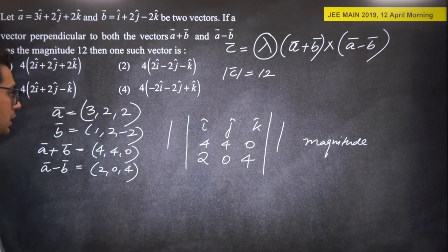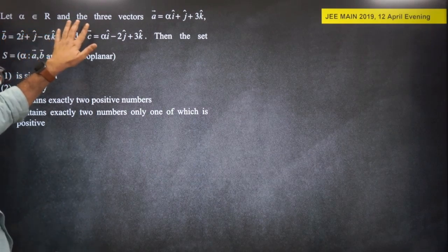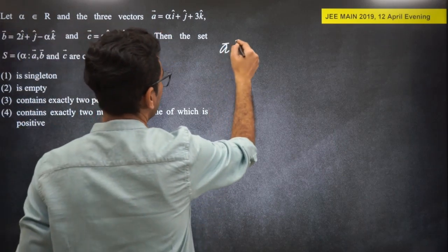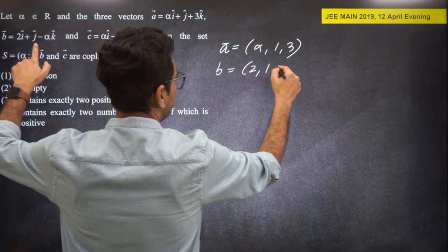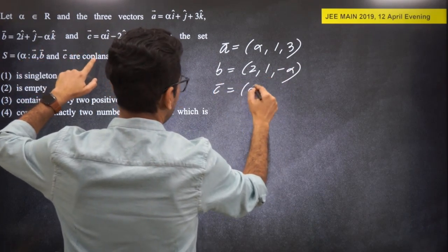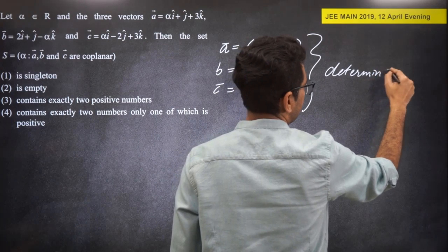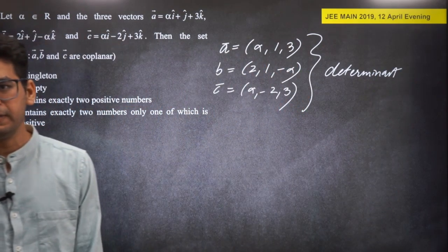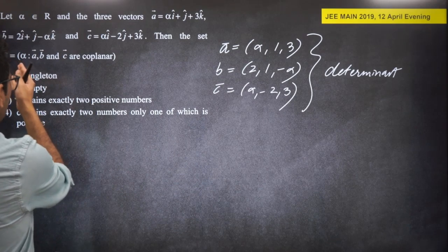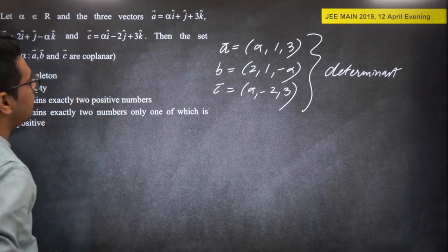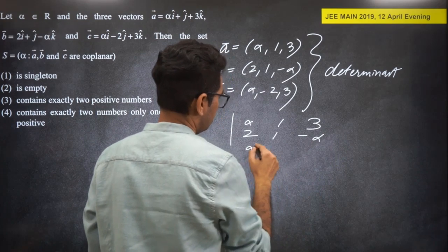Next: alpha ∈ R, three vectors A = (alpha, 1, 3), B = (2, 1, -alpha), C = (alpha, -2, 1). Find the set of alpha values for which A, B, C are coplanar. As expected, coplanarity means the determinant = 0: |alpha 1 3; 2 1 -alpha; alpha -2 1| = 0.